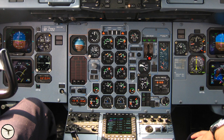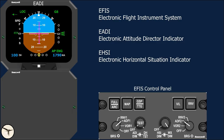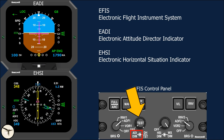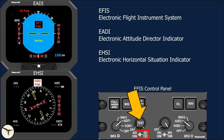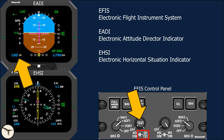EFIS stands for Electronic Flight Instrument System and consists of two CRT screens — the electronic ADI and the electronic HSI — controlled by the EFIS control panel. A double rotating knob controls the E-ADI: the outer knob selects the screen on and off and adjusts brightness, while the inner knob is pressed to test all screens and rotated to set the decision height displayed on the E-ADI.